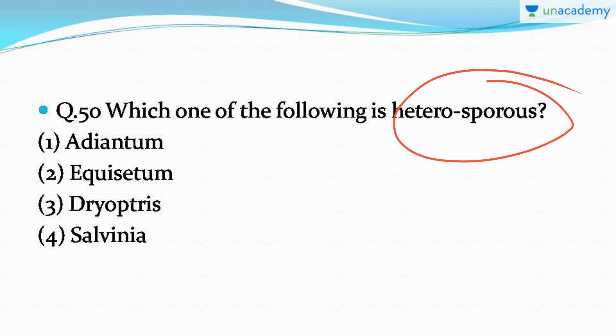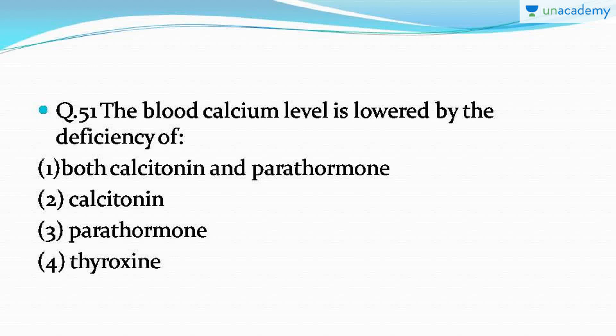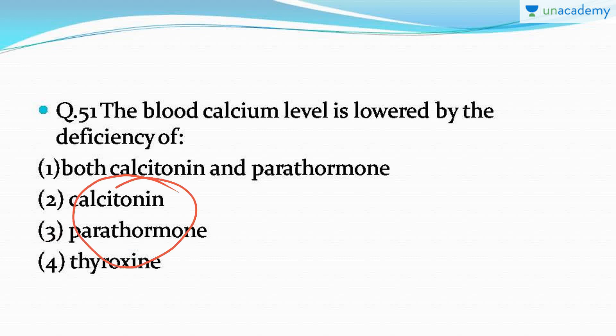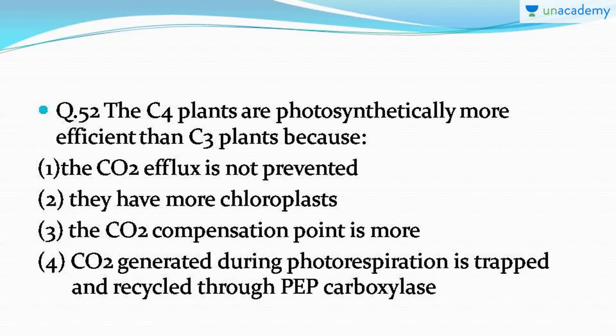Question number 51: the blood calcium level is lowered by the deficiency of which hormone? The correct answer is option number three: parathormone. Parathormone and calcitonin work antagonistically to each other — parathormone decreases blood calcium level whereas calcitonin increases blood calcium level. Please avoid confusion between these two.